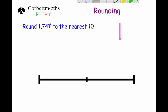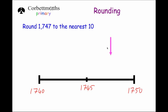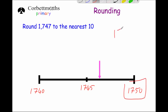Our last question: round 1747 to the nearest ten. If we count up in tens, the multiple of ten just below that is 1740, and just above it is 1750, with 1745 in the middle. On the number line, 1747 would be around about here — so to the nearest ten it would be closer to 1750. And that's it.